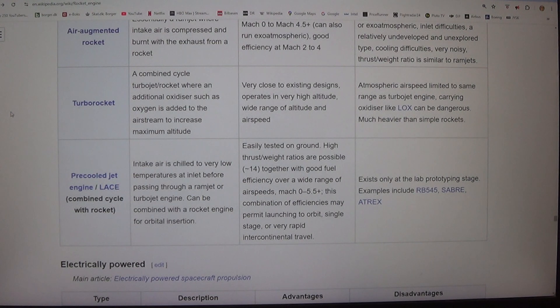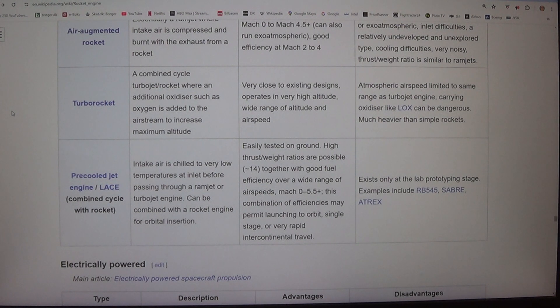Pre-cooled jet engine/LACE - combined cycle with rocket. Intake air is chilled to very low temperatures at inlet before passing through a ramjet or turbojet engine. Can be combined with a rocket engine for orbital insertion. Easily tested on ground. High thrust/weight ratios are possible (~14) together with good fuel efficiency over a wide range of airspeeds (Mach 0-5.5+). This combination of efficiencies may permit launching to orbit single-stage or very rapid intercontinental travel. Disadvantages: Exists only at the lab prototyping stage. Examples include RB545, SABRE, ATREX.